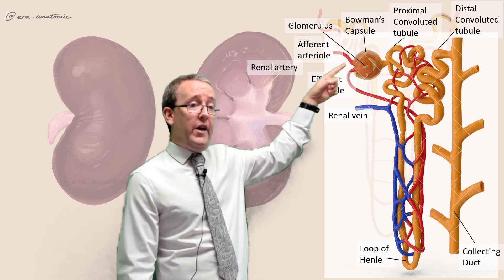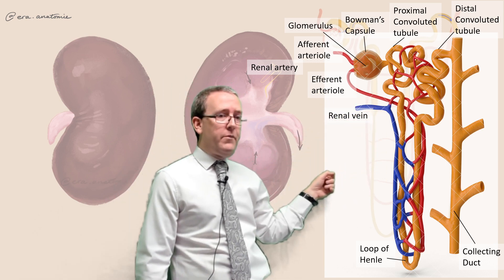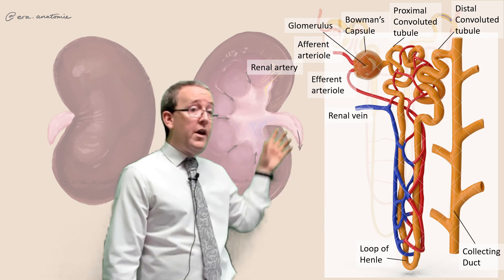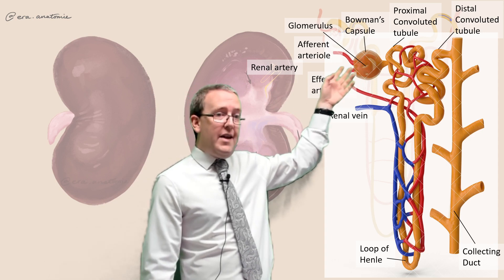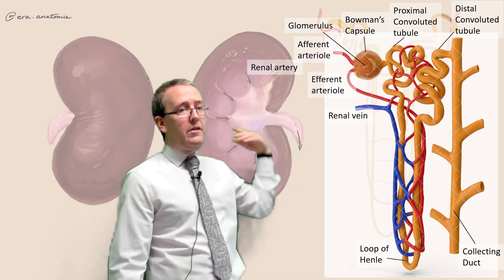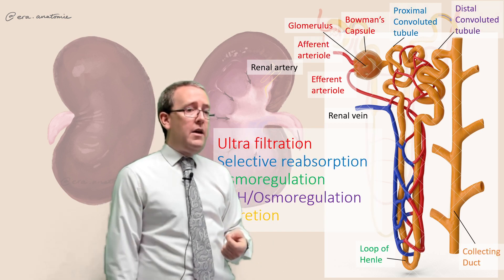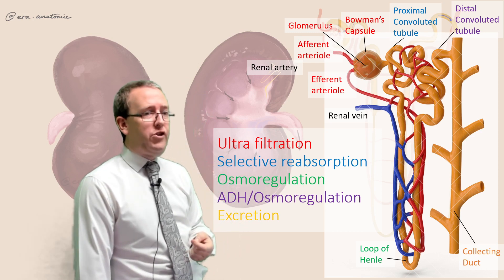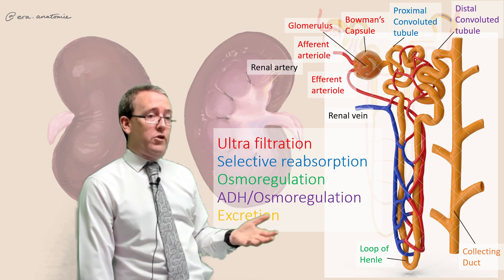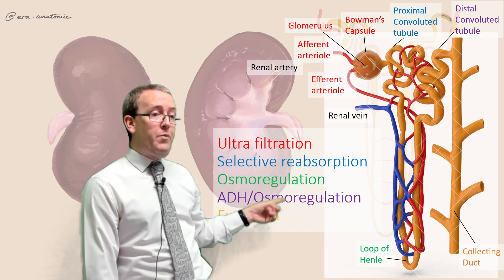The afferent arteriole gets into the glomerulus, which is encased in the Bowman's capsule — that's where ultrafiltration takes place. The efferent arteriole brings the much-reduced blood down and interacts with the loop of Henle, which then becomes the renal vein and exits to return blood to the body. The filtrate — everything that gets filtered out — ends up in the proximal convoluted tubule, which brings it down into the loop of Henle, back up into the distal convoluted tubule, and then eventually into the collecting duct.